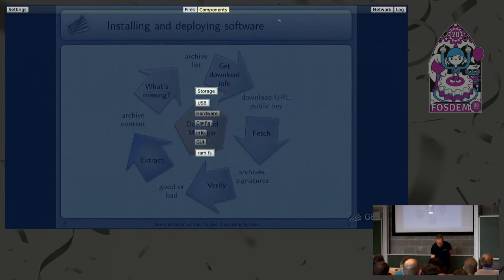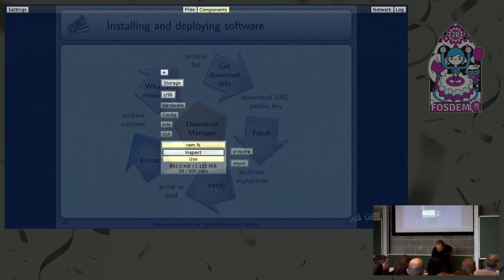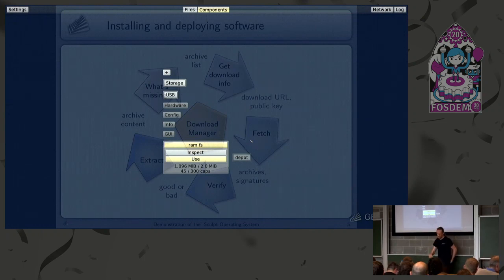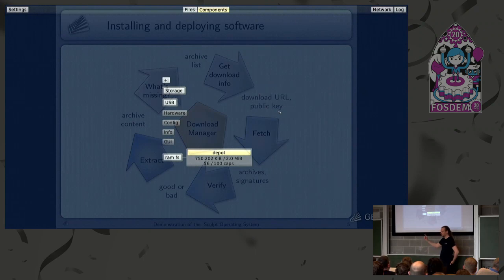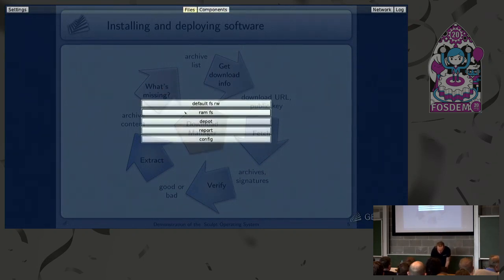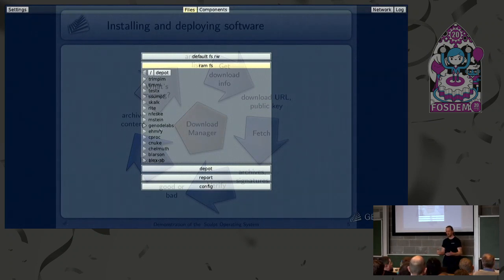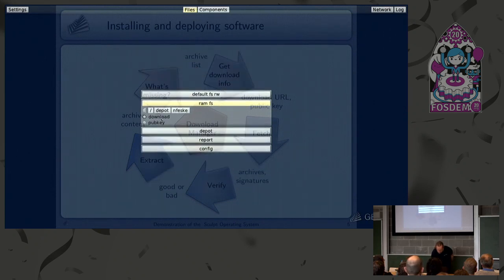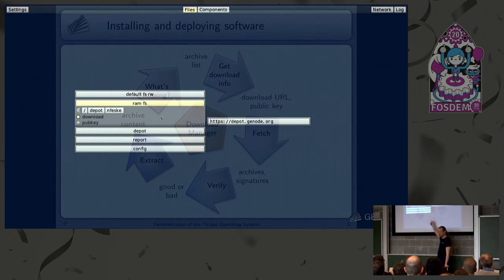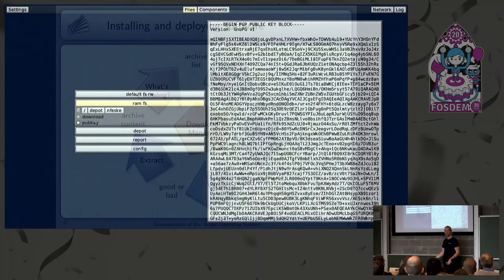We need a place to put the software. In this case we have conveniently this RAM file system over here. So I can just say I want to use this one. Now you see something has happened — there's a new component popping up called Depot. This is basically a kind of chroot component that exposes only a part of the file system to be used as storage for new software. Looking into this RAM file system, you have this .depot directory. Inside the depot, we have pre-populated some subdirectories, one for each software source — these are the Genode developers. Each has a download file — the location where software can be downloaded from, just a web server — and a public PGP key used to verify and validate the integrity of downloads.